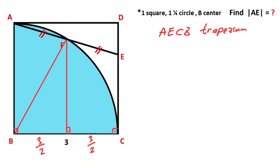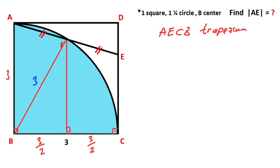After that, if we connect point B and point F, this length is also three units and this length is also three units, because of the radius. Then if you focus on this triangle, notice that the ratio of these two sides is 2, which means this triangle is a 30-60-90 special right triangle, so here is 30 degrees.